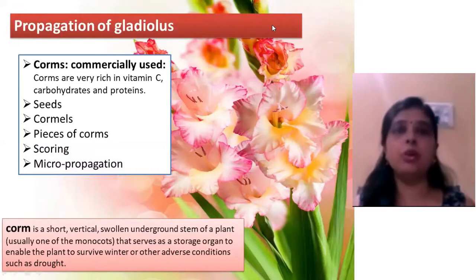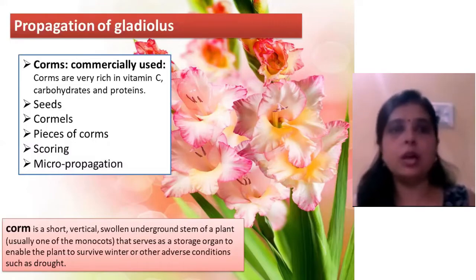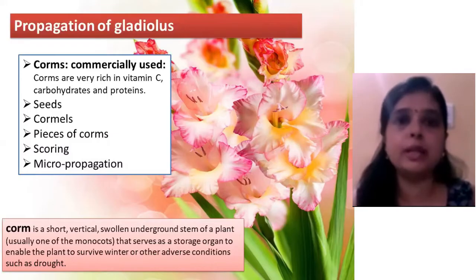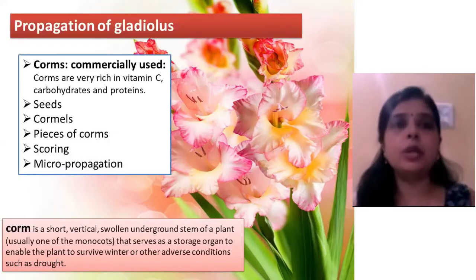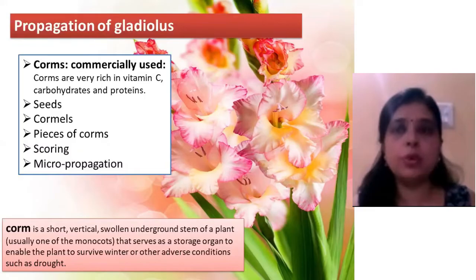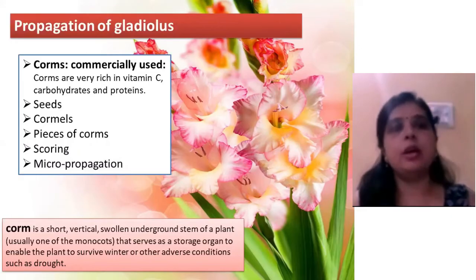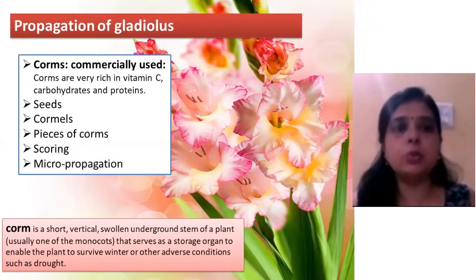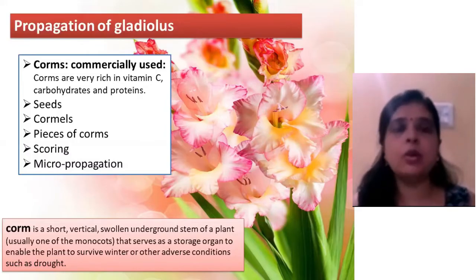Gladiolus is mainly propagated by the use of corm. Corm is commercially used for the propagation of gladiolus. Seed is used for breeding new cultivars. Other propagation materials include cormel, pieces of corm, scoring, and micropropagation. But the corm is the commercially used planting material of gladiolus.